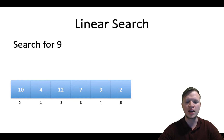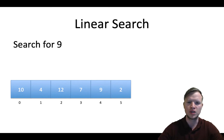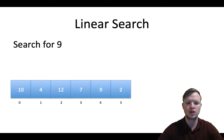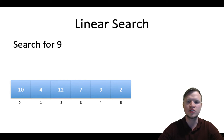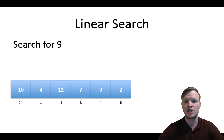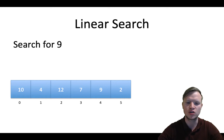Let's say we have an array of size 6, that means we have 6 elements in this array. The elements are 10, 4, 12, 7, 9, and 2, and we are searching for a value of 9. The linear search algorithm is linear in its method, meaning it starts from index 0.